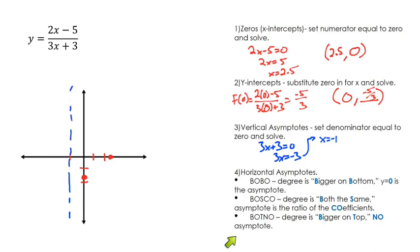Now, the horizontal asymptotes, I think this is kind of the hairiest part of graphing rational functions. I always break it down to three categories. One of my other teachers told me this little rhyme, and I like it. You have Bobo, Bosco, and Botno. And that's how you tell what the asymptotes are, meaning you look at the degree.